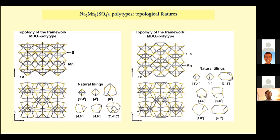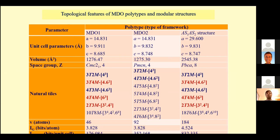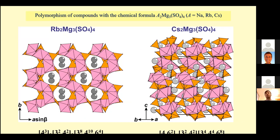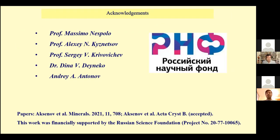Here you can see the cationic nets and the set of tilings occurring in different types of polytypes. Regarding polymorphic modification: if we substitute one alkaline cation for another — replacing sodium with rubidium or cesium — we get completely different structures. Thank you very much. My research is not strongly based on a mathematical fundament, but I wanted to show the possible application of this concept, based on a very strong mathematical foundation, to crystallographic applications.